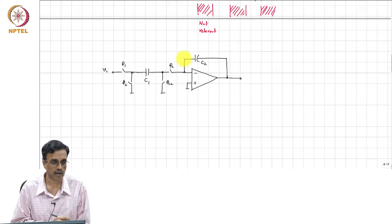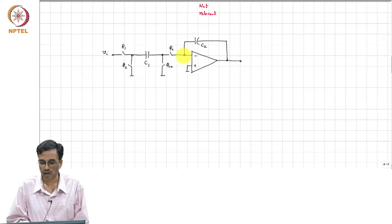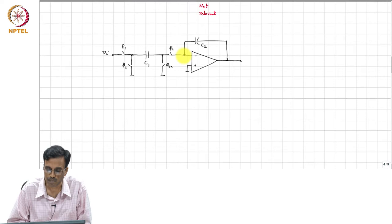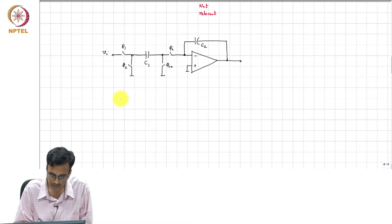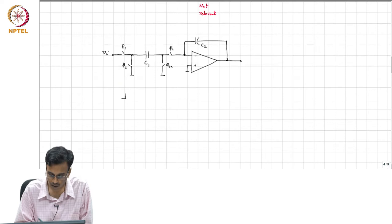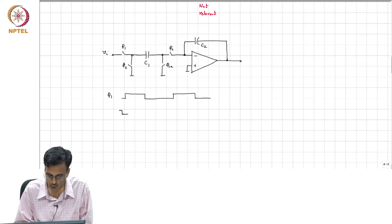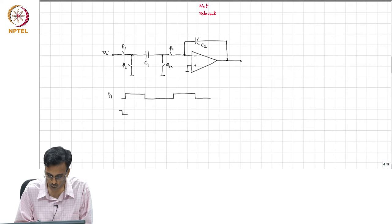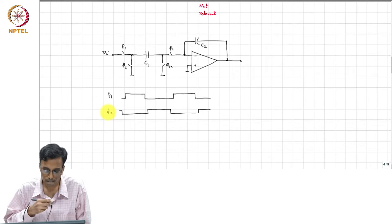The op amp of course in reality is going to have finite bandwidth and so on. And the way this works is the following. So, phi_1 is a clock phase like this, phi_2 is non overlapping with phi_1.